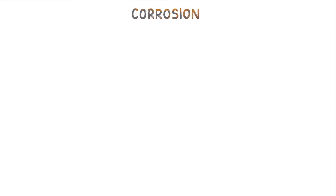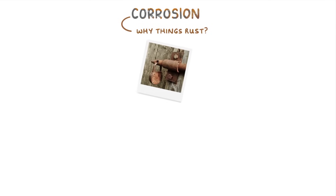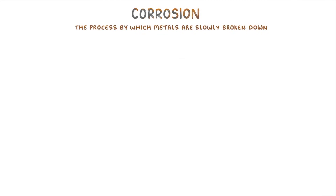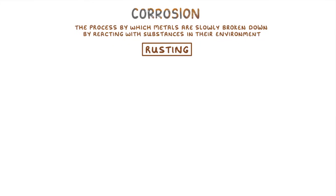In this video we're going to look at corrosion, and in particular at why things rust and how we can prevent it. Corrosion is a general term that refers to the process by which metals are slowly broken down by reacting with substances in their environment. One example of this is rusting, which is where iron reacts with oxygen and water from the environment.